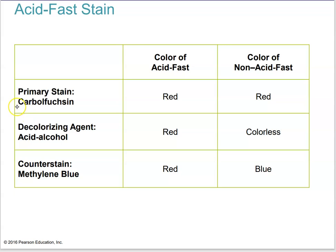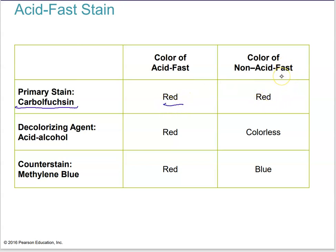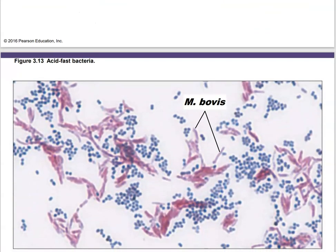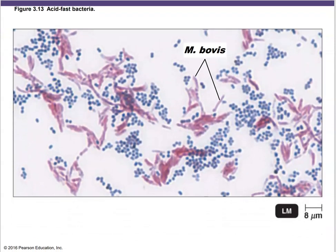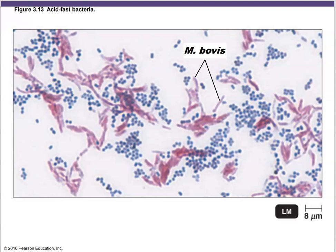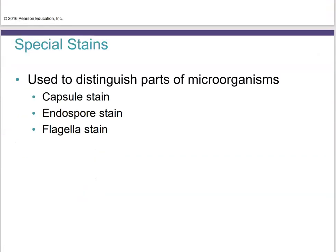For the acid fast stain, the primary stain is carbolfuchsin, a reddish stain. After the primary stain, all cells — both acid fast and non-acid fast — will be red. Then the decolorizing agent, acid alcohol, is applied. Acid fast bacteria retain the red dye, but non-acid fast bacteria lose it. A counter stain of methylene blue is then used, so non-acid fast bacteria appear blue. For example, Mycobacterium bovis appears red while non-acid fast cocci appear blue.